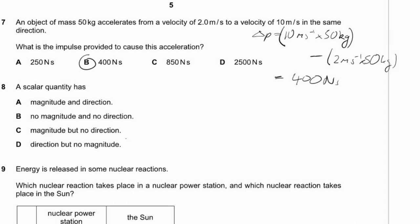Question 8. A scalar quantity has magnitude and no direction. A vector quantity has both magnitude and direction. We are being asked about scalar quantities, so the answer is magnitude and no direction. Answer C.